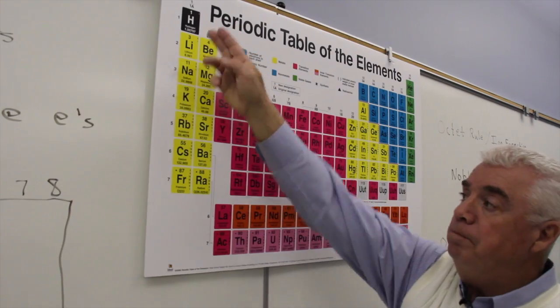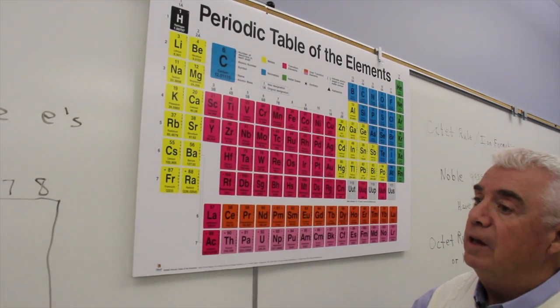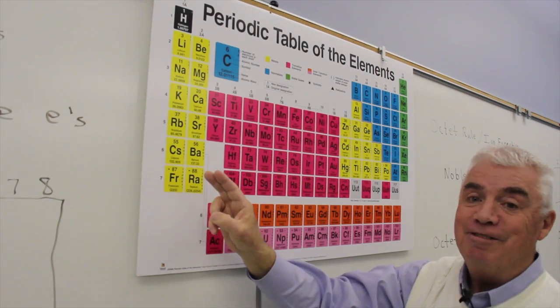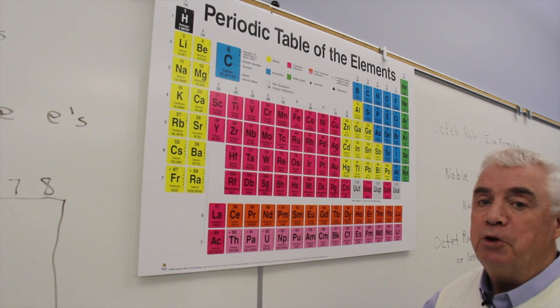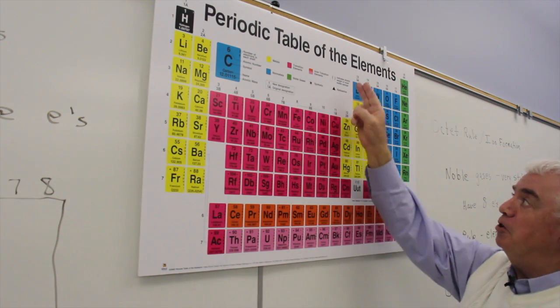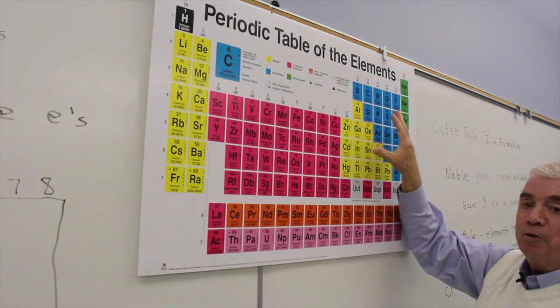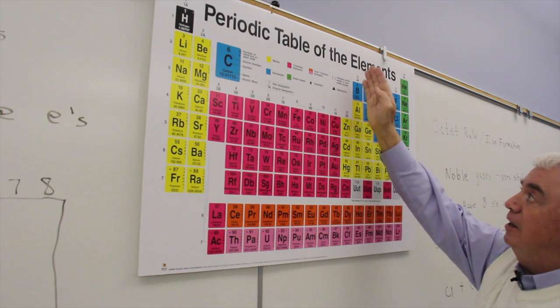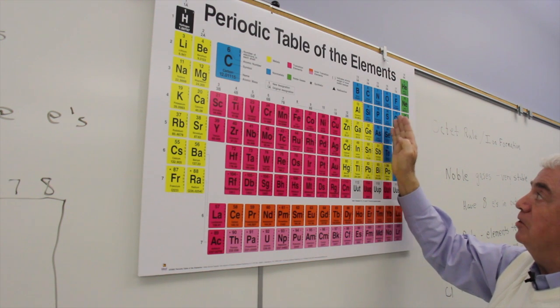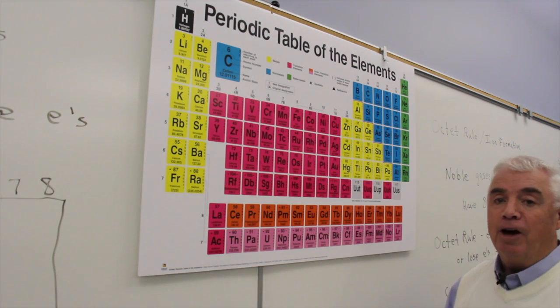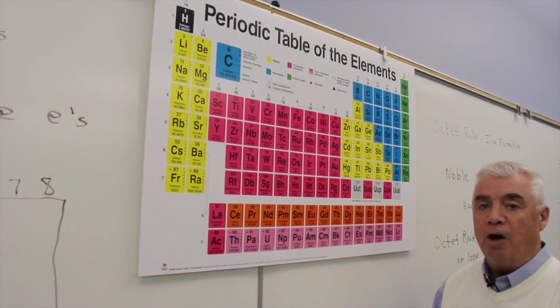This first column, group 1A, they all have one valence electron. Those elements in group 2A have two, and so on. As we get over here to the right-hand side, group 3A has three, 4, 5, 6, 7, and finally 8 valence shell electrons.